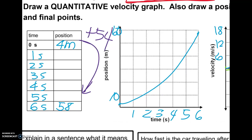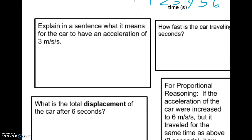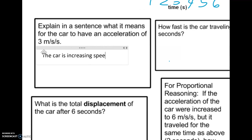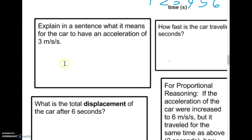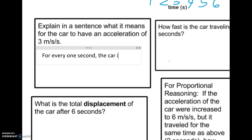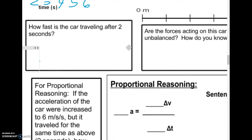Next part: explain in a sentence what it means to have an acceleration of three meters per second squared. It means that for every one second, the car gains speed of three meters per second.